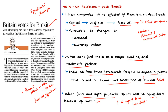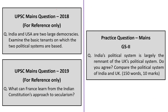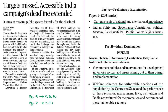To summarise, we have seen the geography of UK, the polity of UK, the recent elections in United Kingdom, how these elections will influence Brexit, and India-UK relations. A practice question will be discussed at the end of the session. Now let us move on to the next news article.